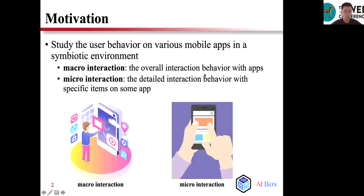Instead of focusing on some specific app alone, it has become a popular method to study the user behavior on various mobile apps in a symbiotic environment. Specifically, we consider two types of interaction data: macro-interaction and micro-interaction. These two pictures simply illustrate the meaning of these types of interaction data. Macro-interaction refers to the overall interaction behavior with apps, and micro-interaction refers to the detailed interaction behavior with specific items on some apps.